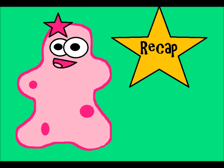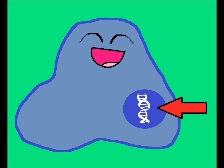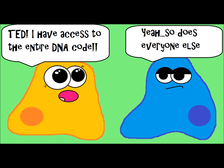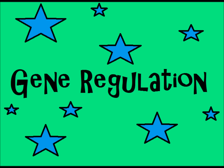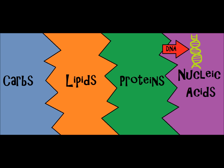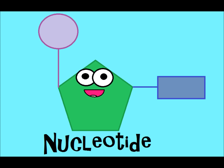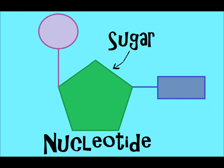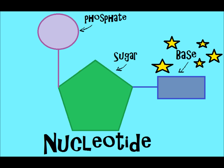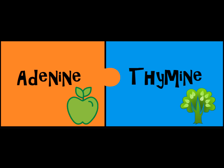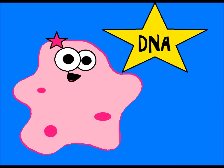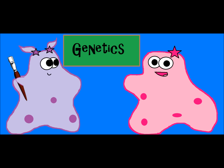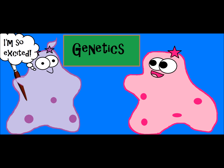Let's review what we talked about today. We discussed the importance of DNA — it's found in the nucleus of cells, and every single cell contains all of your DNA, though it's not always turned on in every cell depending on the cell's function; that's called gene regulation. DNA is a type of nucleic acid, a biomolecule made of nucleotides. Nucleotides contain three parts: a sugar, a phosphate, and a base — and it's the base that codes for your traits. We also covered which bases match using the 'apples on the tree, cars in the garage' mnemonics. Understanding DNA is essential to understanding how our bodies function, and when we get into genetics, we'll talk about how DNA actually codes for traits.